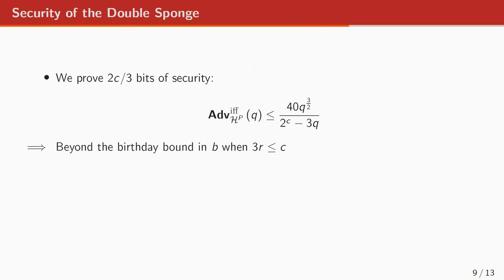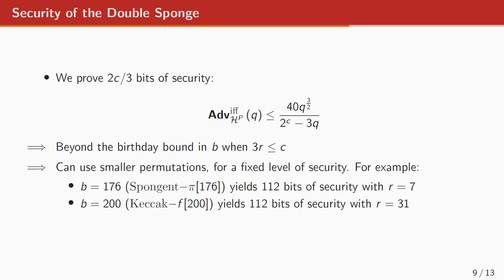We proved 2C over 3 bits of security — more precisely this indifferentiability bound — and it is beyond the birthday bound in the permutation size when the rate is relatively small compared to the capacity. This matches our initial motivation: given a certain permutation size, push as far as possible the maximal level of security. For example, with a permutation size of 176 bits, it's possible to reach 112 bits of security with a rate of 7. If we increase the permutation size to 200, the rate can be increased to 31. So with the double sponge, Elephant is able to provide a hash function meeting the lightweight crypto requirements, at least with its two largest members.